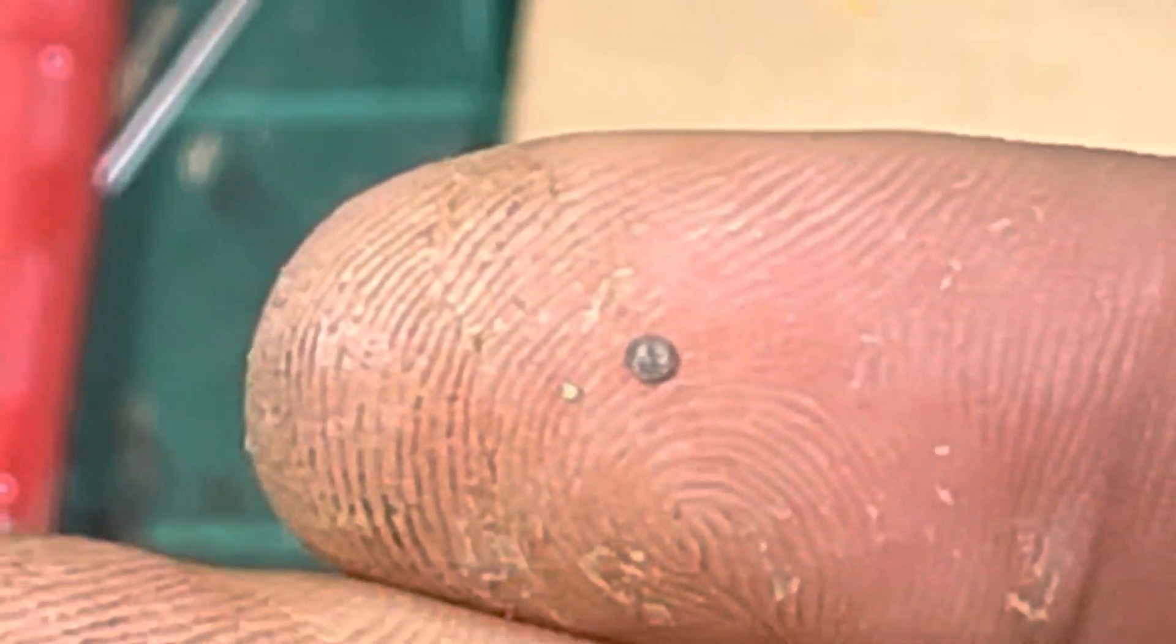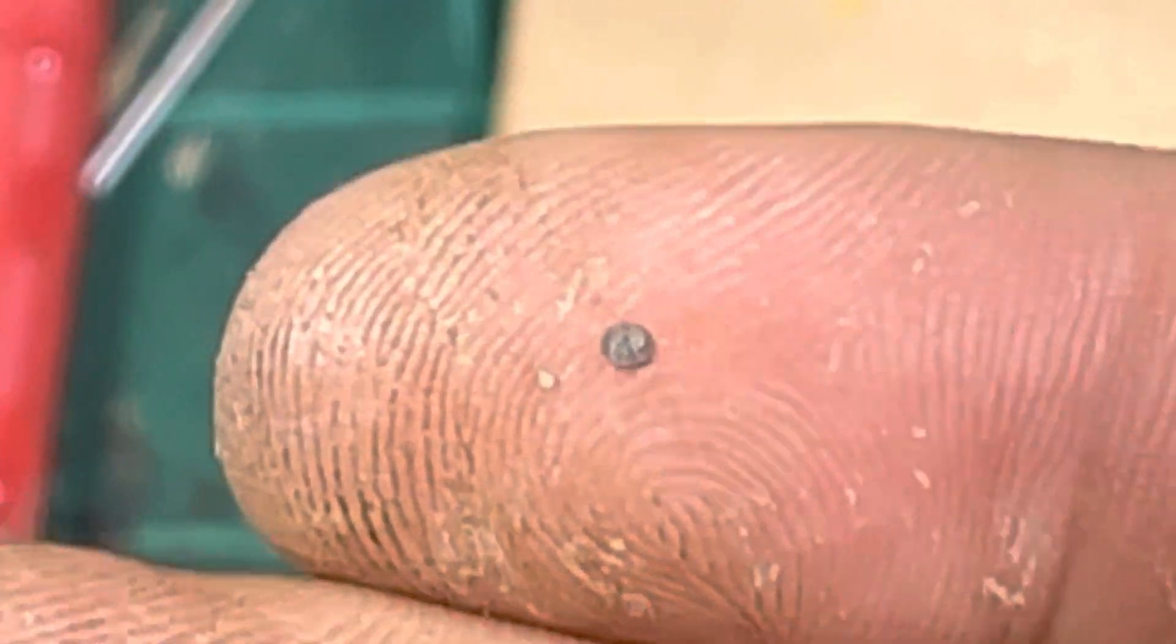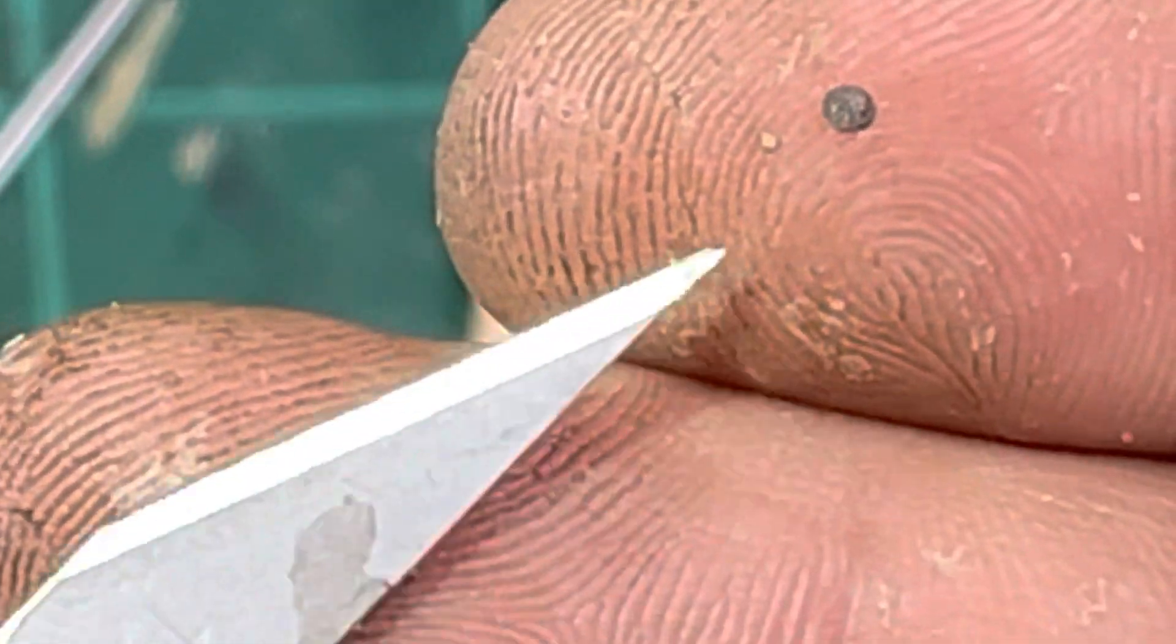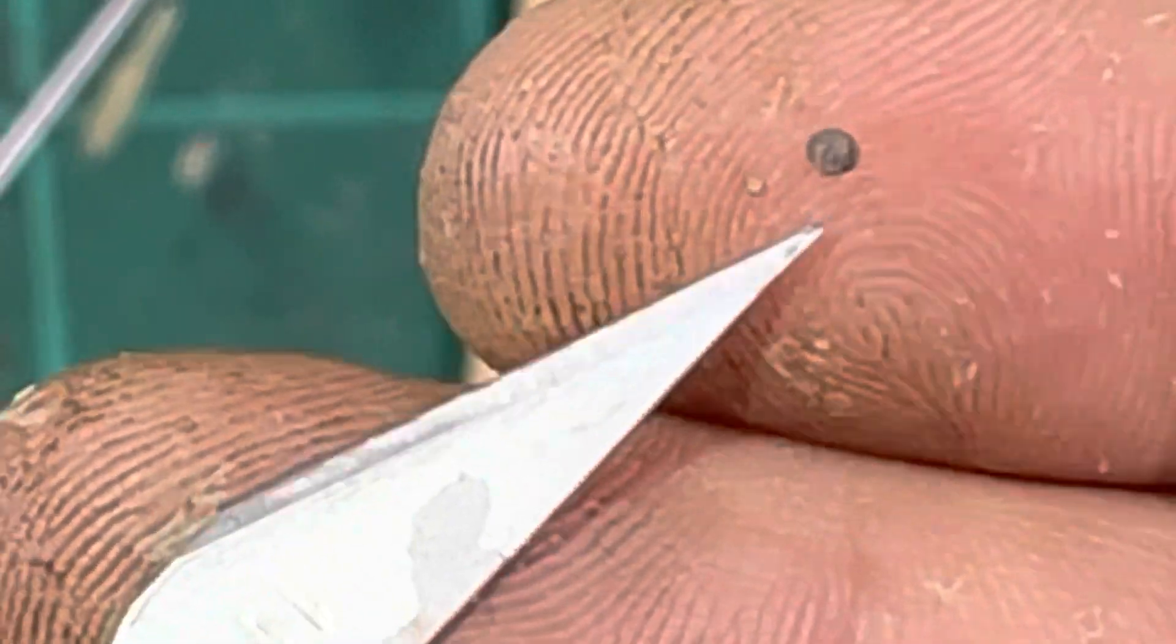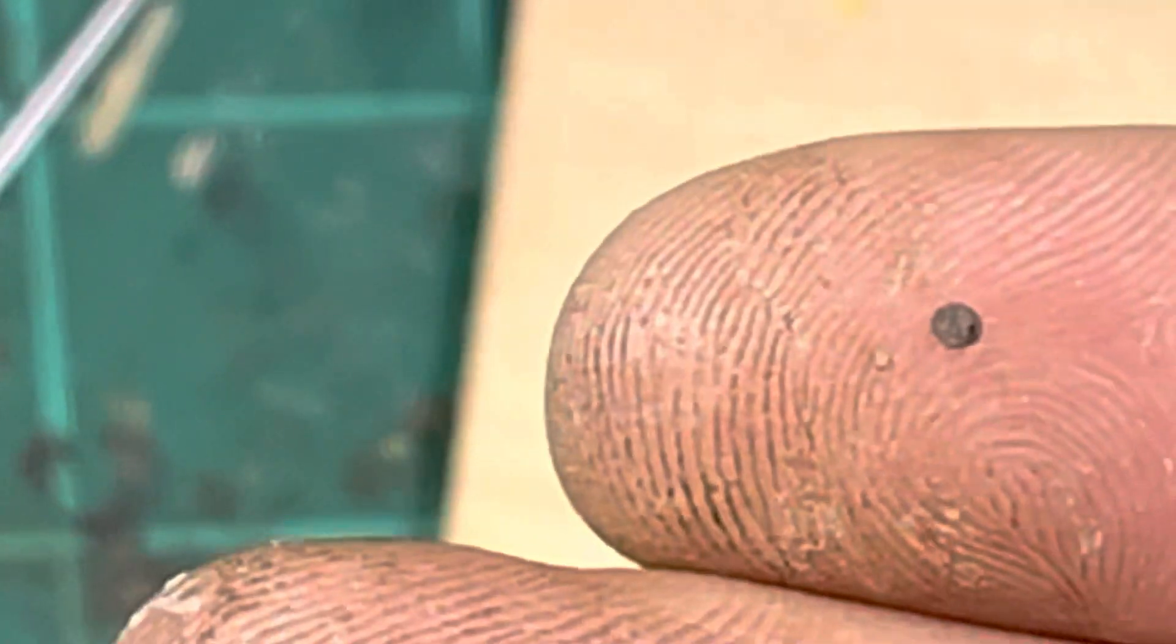Who needs nut, bolt, and washer castings when you have a laser cutter? Here's a half millimeter hexagonal bolt head, and here is a meter millimeter and a half washer.